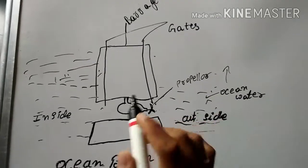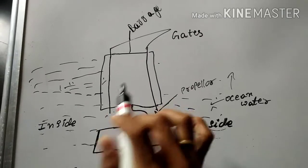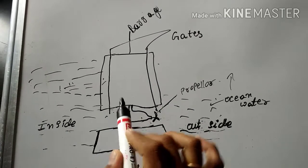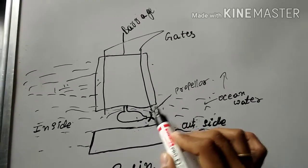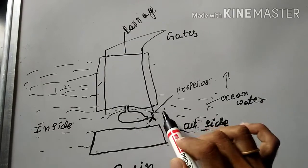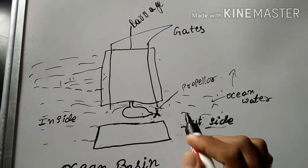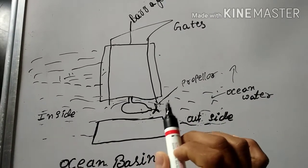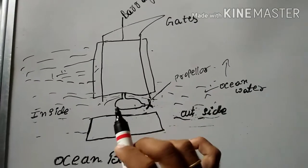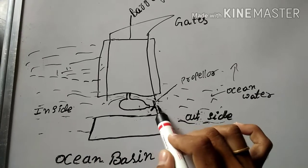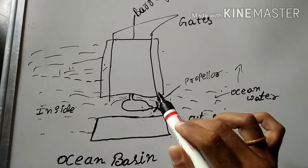Whenever the pressure increases, the water is slowly released to the outside of the barrage. At the time of releasing, the gates of the barrage are opened. The water flows from inside to outside, touching the propeller. Whenever the water touches the propeller, the propeller starts rotating — just like how air touching the blades of a wind turbine causes the turbine to rotate.